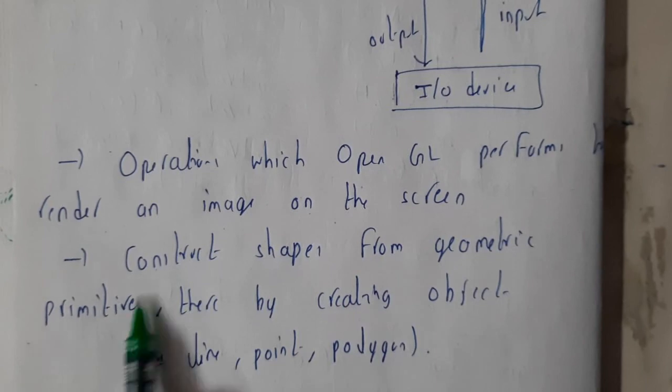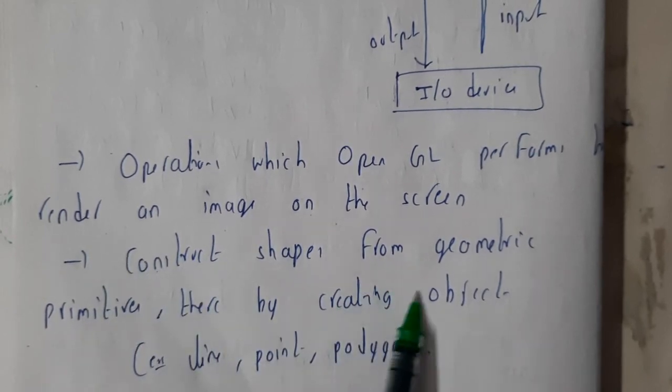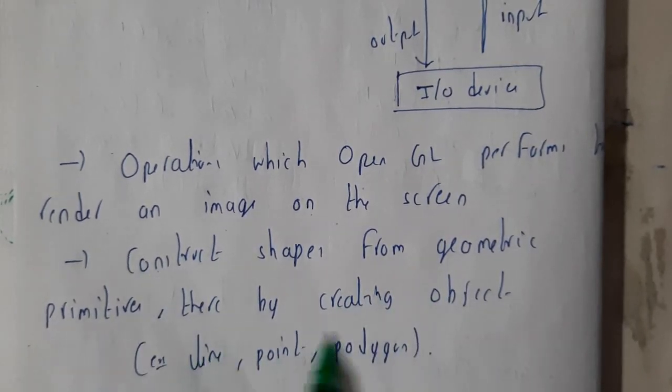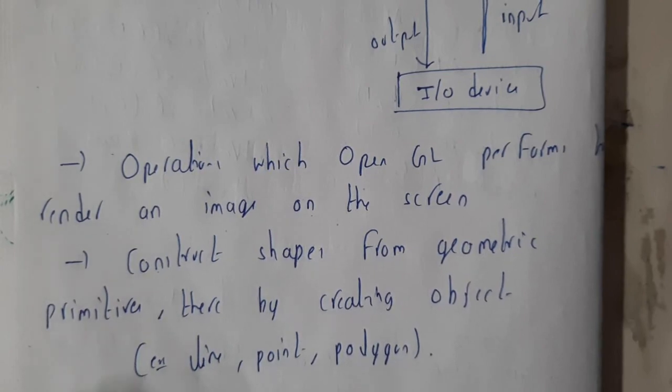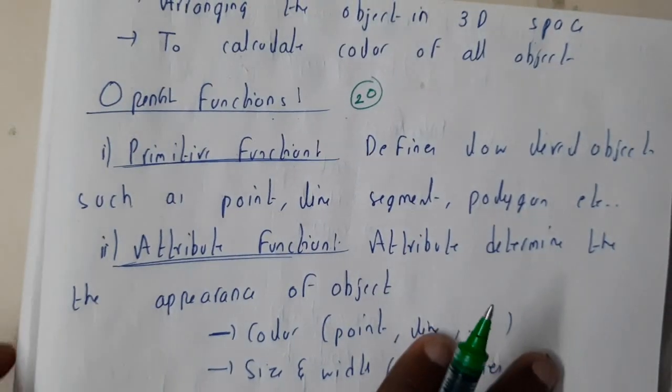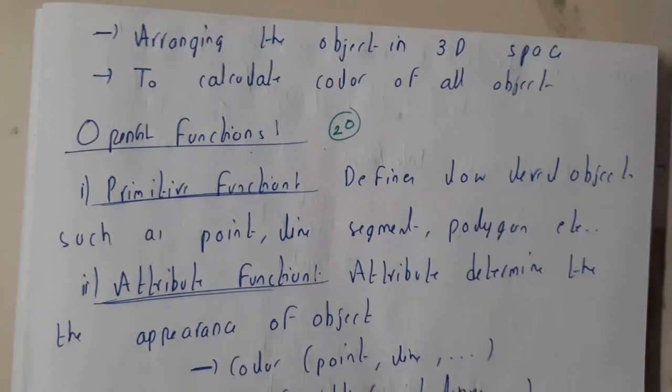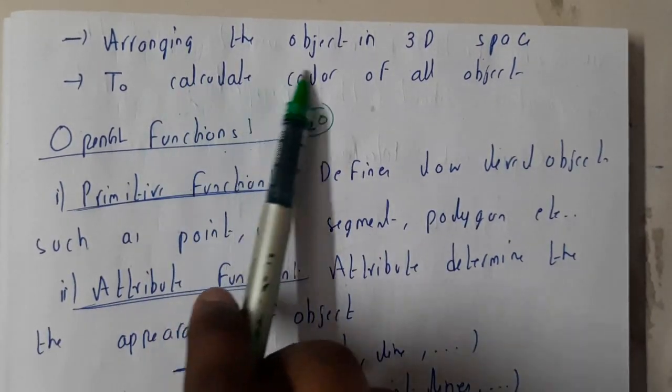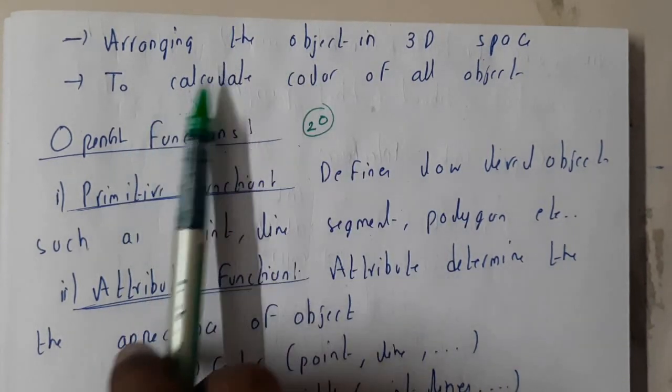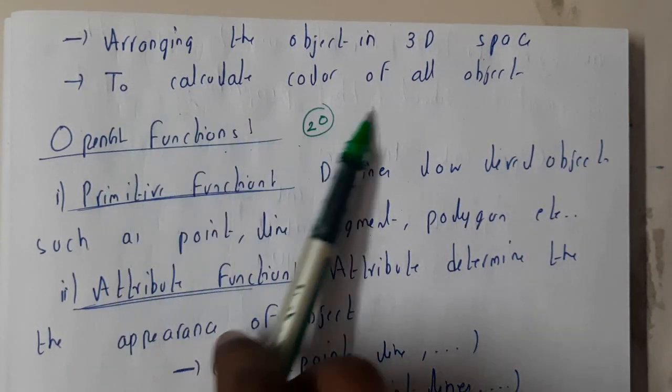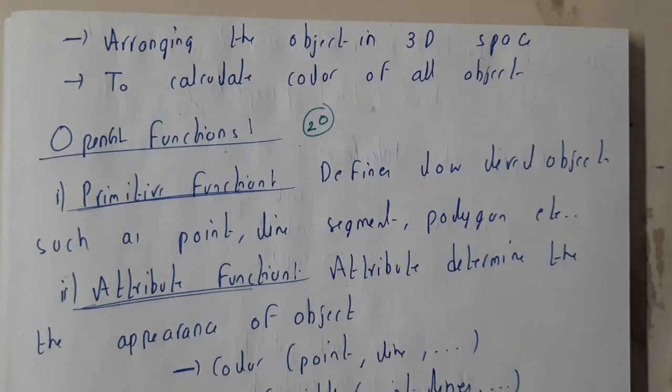Constructing shapes from geometric primitives - these are created using lines, polygons, and points. We also arrange the objects in 3D space and calculate the color of the objects. I hope everyone got a small idea on this.